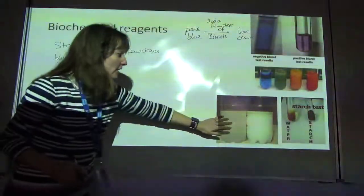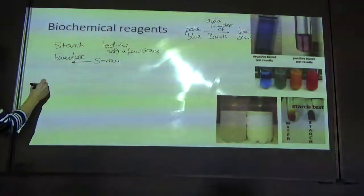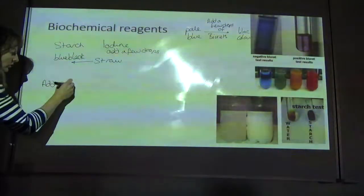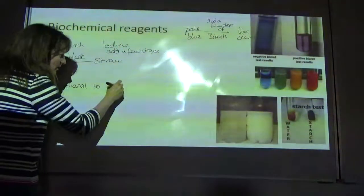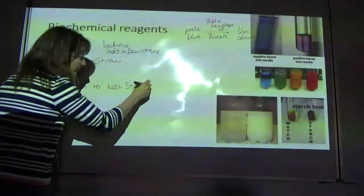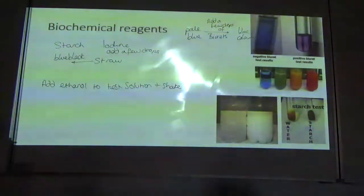The next one is the ethanol emulsion test. So if we are looking for lipids in a solution, then first of all we add ethanol, which is an emulsifier, to the test solution and shake. You must shake it up to mix the ethanol with the test solution.